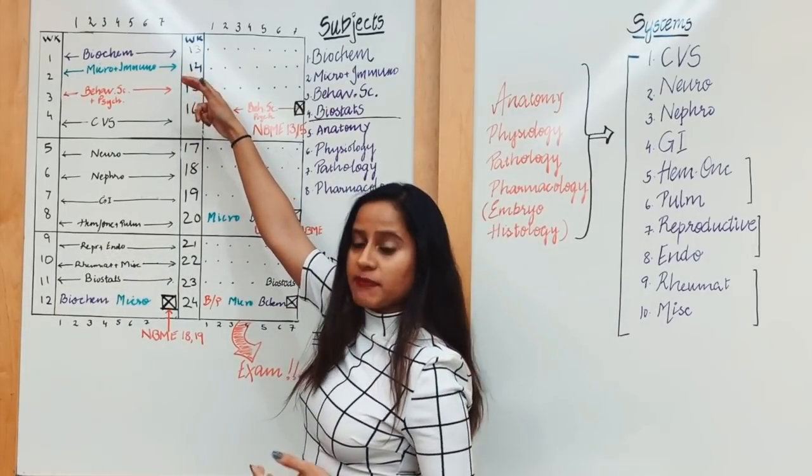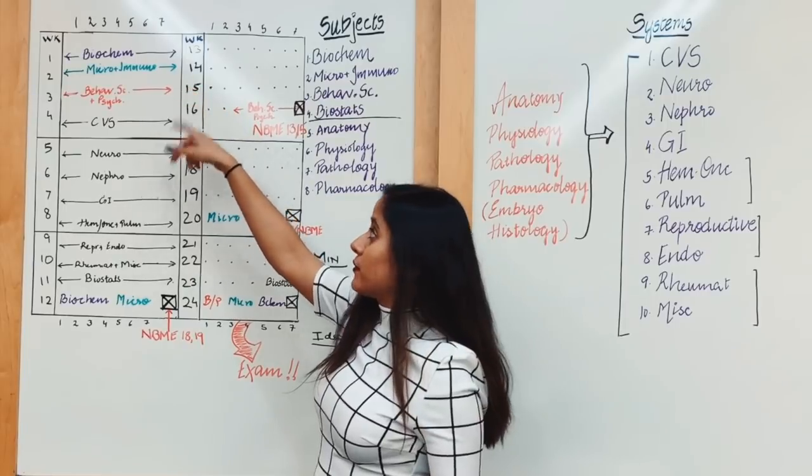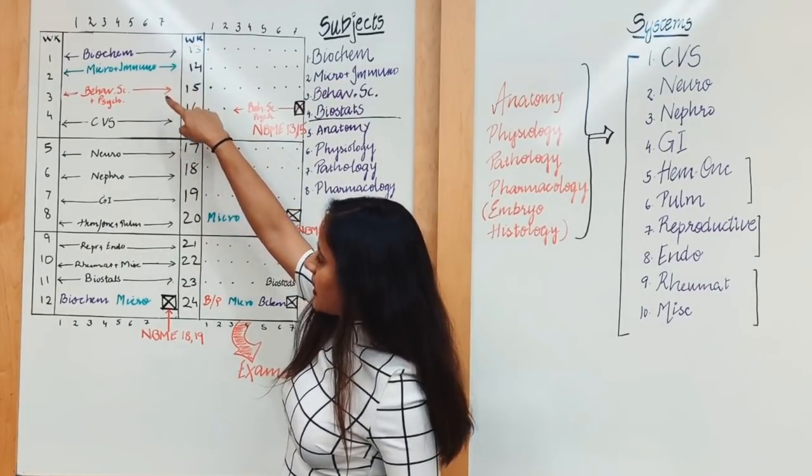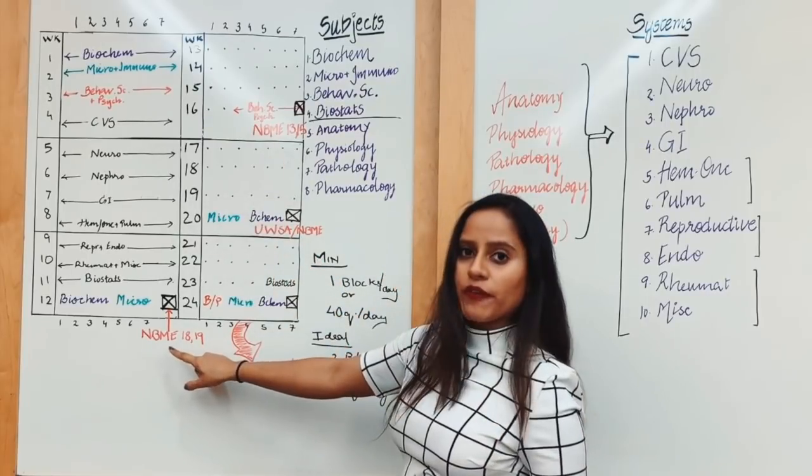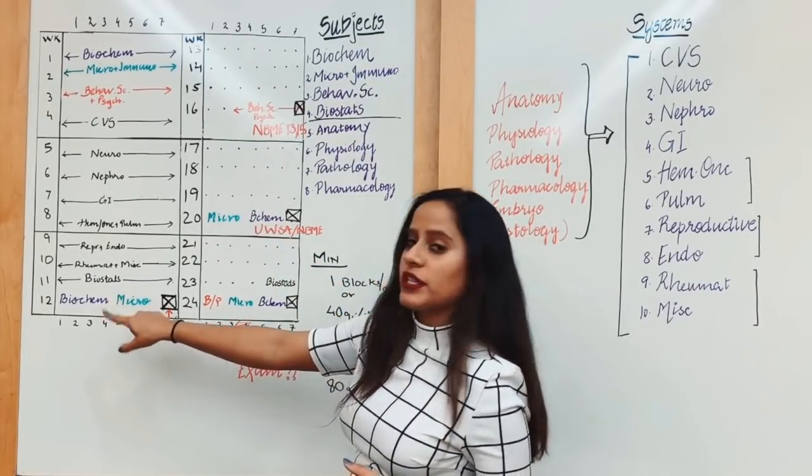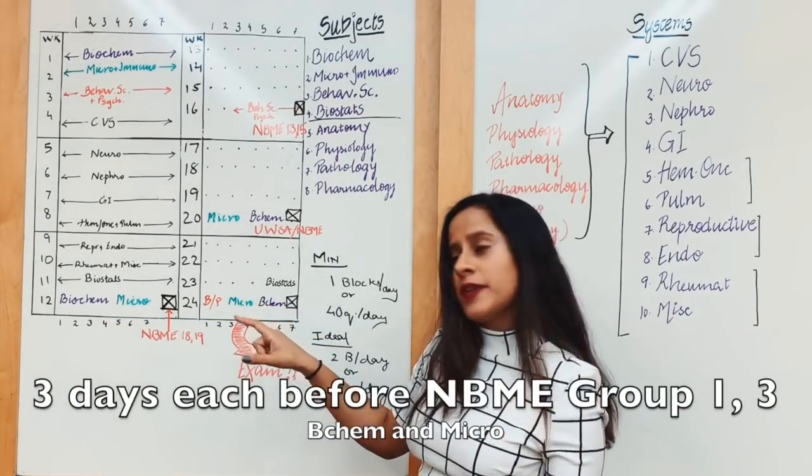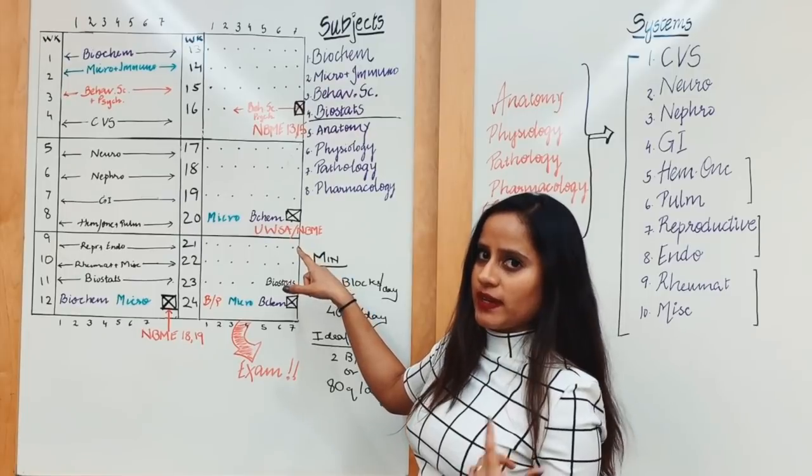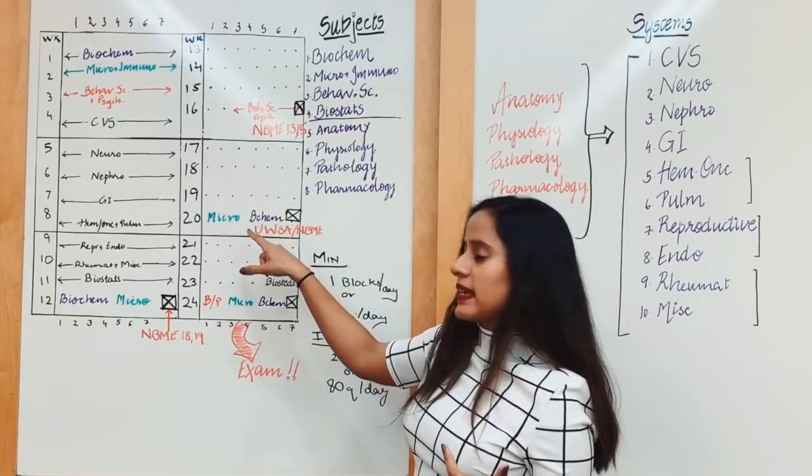Between these two subjects, because they're volatile, you need to revise them quite frequently. You should do them in your first and second week, and then right before your first group of NBMEs, give another three days to microbiology and biochemistry each. Then again before your UWorld simulation and NBMEs, give another two or three days each.